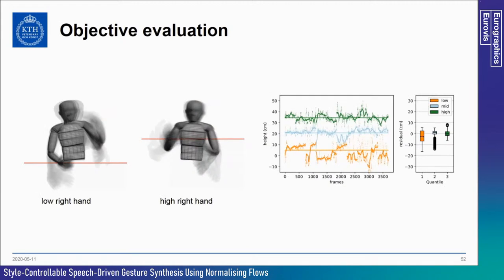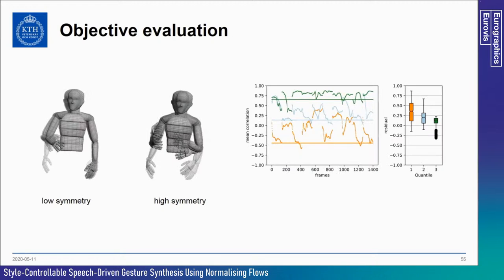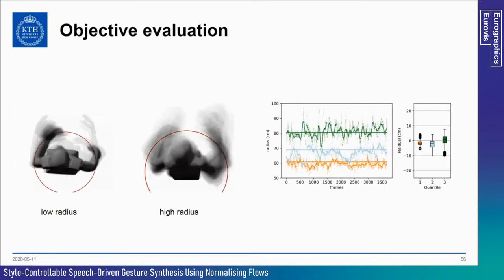Since style features were automatically extracted, we can objectively compare how well the generated gestures follow the desired style. For height control, average images over a 20-second period show the output gestures follow the input style to a high extent. For speed control, the trend is similar but output gestures tend to be somewhat slower than the input. The symmetry control shows good adherence in general, and the radius control shows very good adherence.